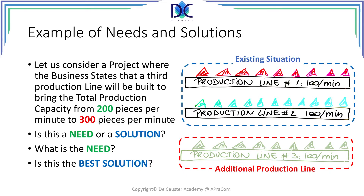The first solution would be to increase the capacity of the existing production lines. In certain cases, we can increase that capacity to 150 units per minute, which would also give us the 50% increase and a total capacity of 300 units per minute. A second alternative solution would be to outsource that additional production capacity to another company. Now let's quickly review the different possible solutions and some of the pros and cons of them. The first solution was to build a third production line. Building a production line is not cheap, it takes time, and we need additional space.